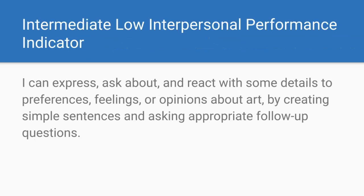So let's consider the Intermediate Low Interpersonal Performance Indicator: I can express, ask about, and react with some details to preferences, feelings, or opinions on familiar topics by creating simple sentences and asking appropriate follow-up questions. Students will level up to intermediate low when they are able to speak with some details on the theme of talking about art.